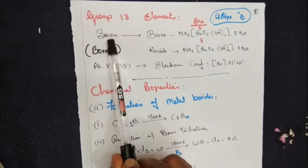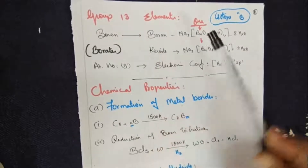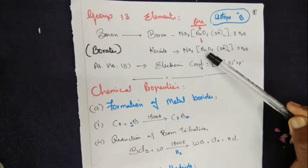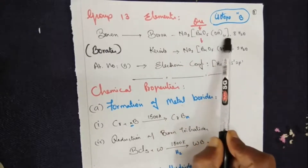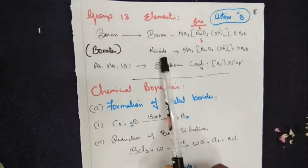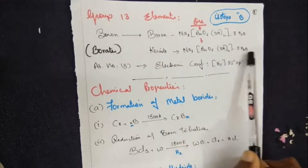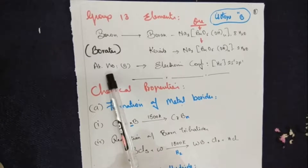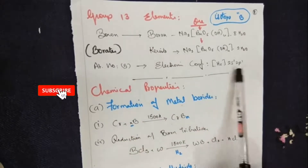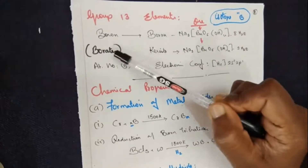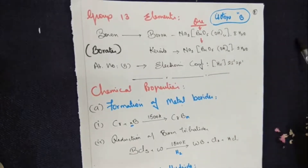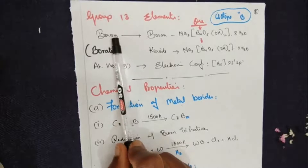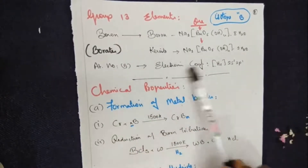We will go with boron. The boron element is derived from borax and kernite. Both have the same molecular formula; the only difference is the number of water molecules present. Borax formula: Na2B4O5(OH)4 · 8H2O. Kernite: Na2B4O5(OH)4 · 2H2O. The atomic number of boron is 5, and its electronic configuration is [He] 2s2, 2p1.